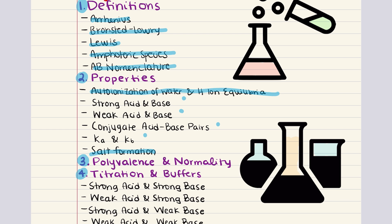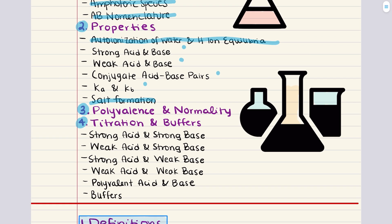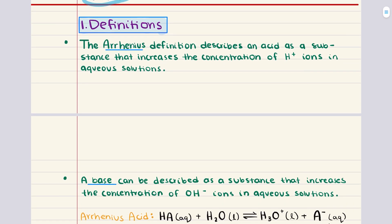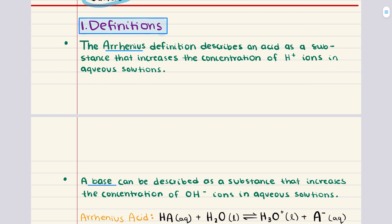Finally, our last objective is titled titration and buffers. We're going to study titrations involving strong acid-strong base, weak acid-strong base, strong acid-weak base, and weak acid-weak base interactions. We'll also explore titrations involving polyvalent acids and bases. This chapter will conclude with an in-depth look at buffers and the Henderson-Hasselbalch equation. With this introduction, let's go ahead and get started with the first objective.